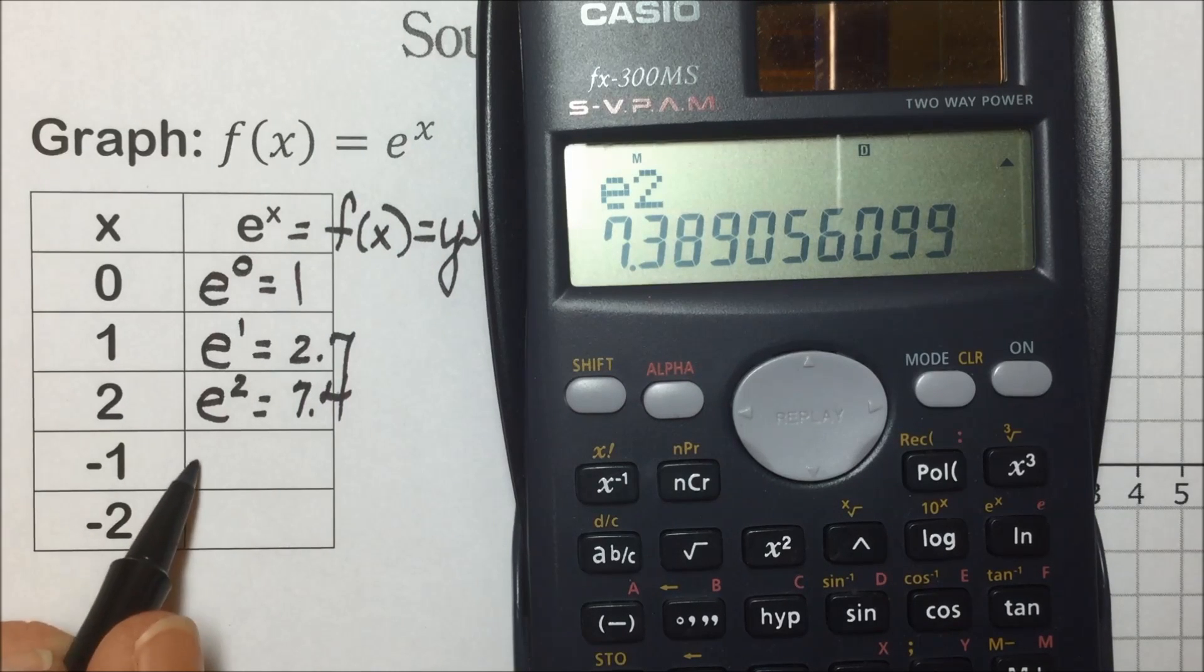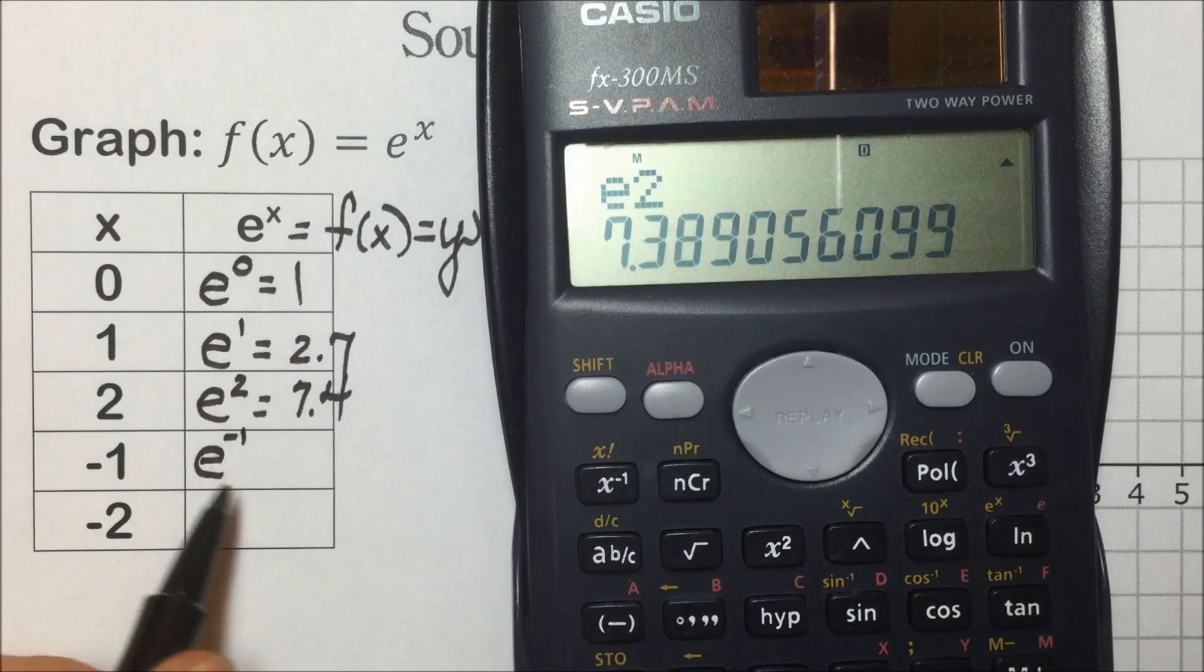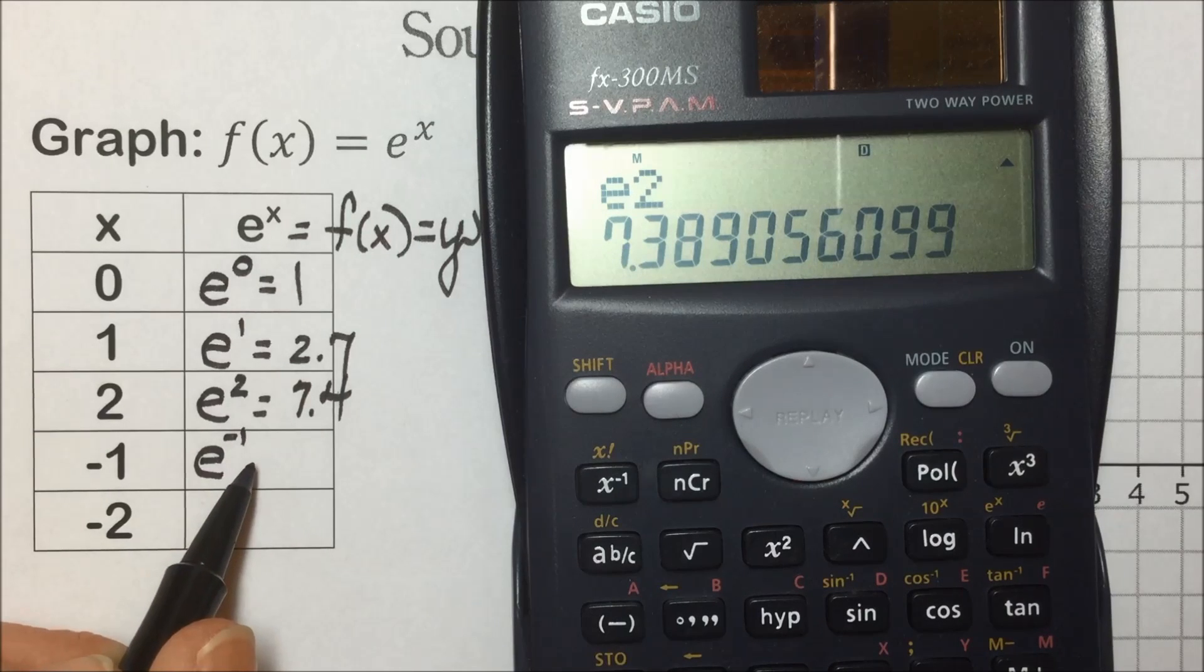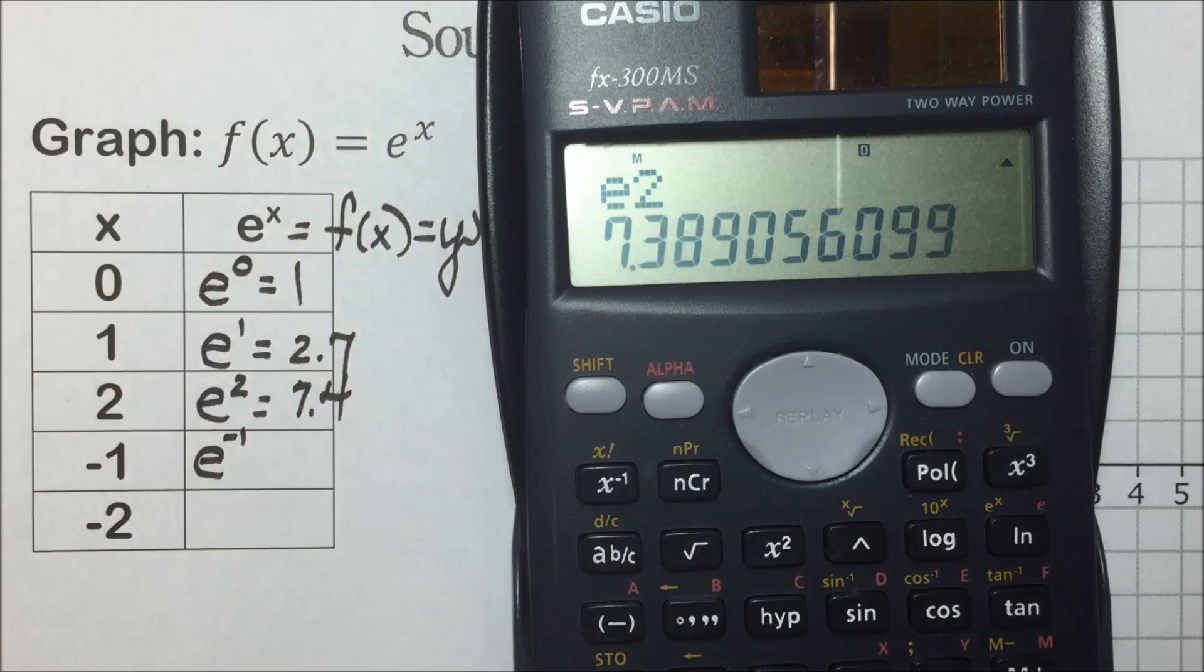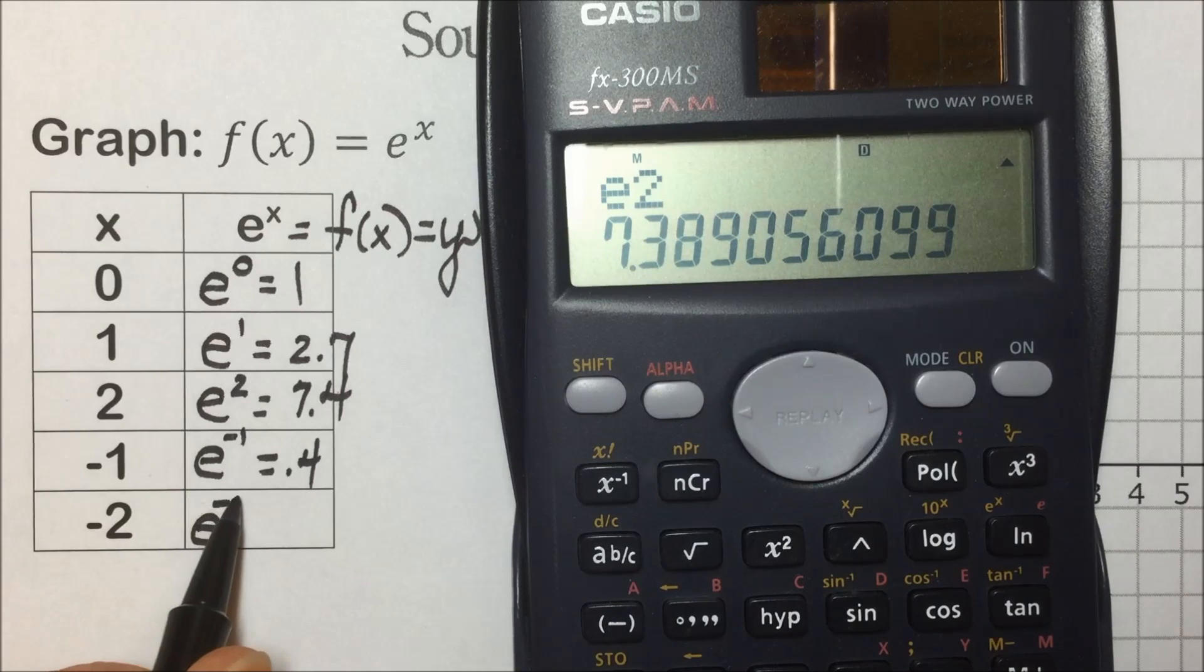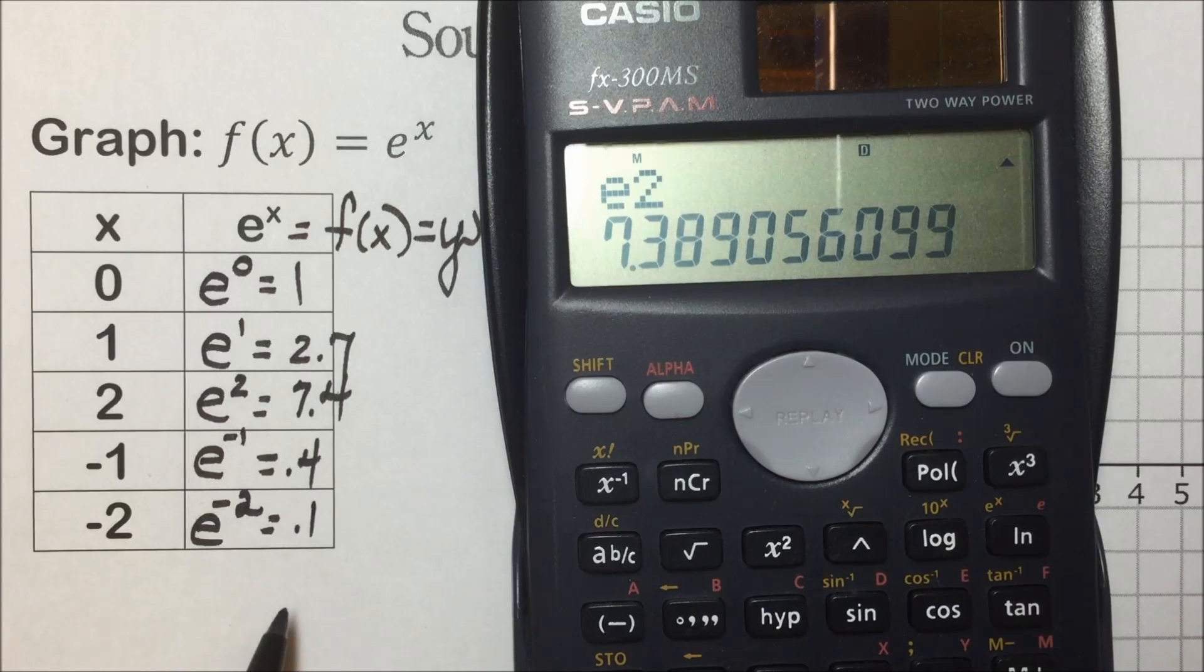e to the negative 1 is putting that value in the denominator, so we actually have 1 over 2.7, and when you calculate that you end up with 0.4. e to the negative 2, when we let x equal negative 2, results in a value of 0.1.